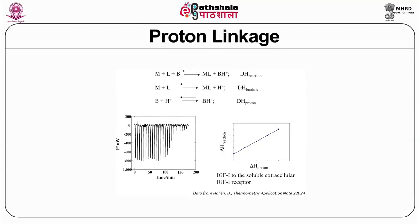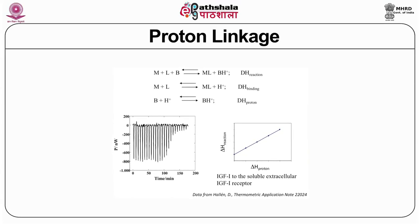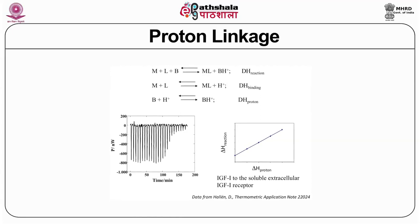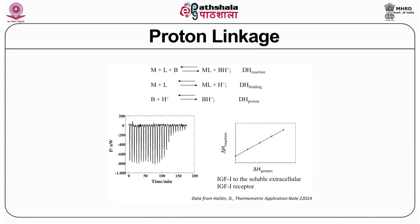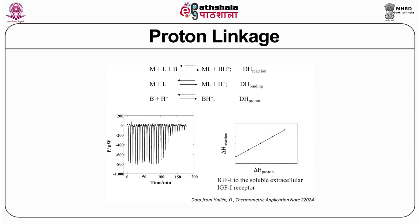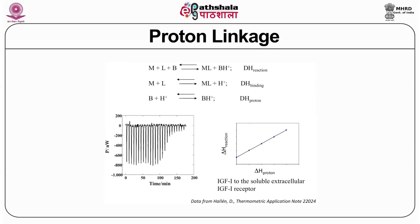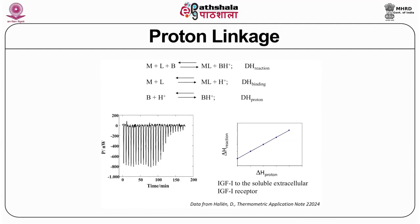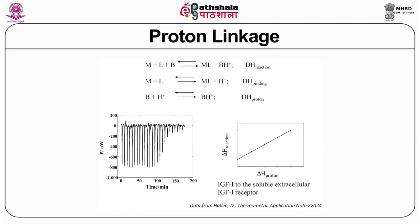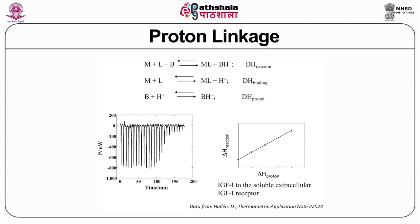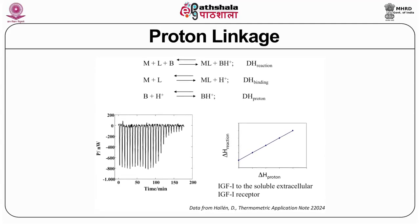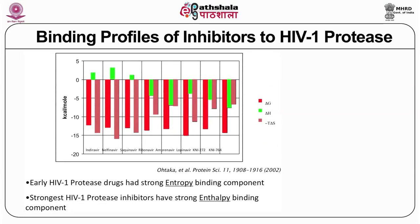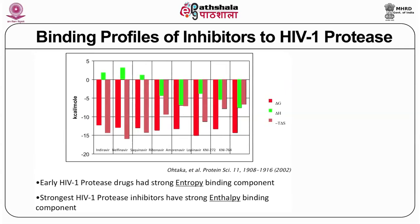When there is a change in pH, there is also a proton linkage. A ligand and a polymer interact to give ML plus BH⁺ — one reaction involves binding coupled to proton interaction. These three components can be found by plotting delta H of the reaction versus delta H of the proton. An example shown is IGF-I receptor 2, specifically the soluble extracellular IGF-I receptor 2. Binding profiles of inhibitors of HIV-1 protease are shown, with data taken from Protein Science, 2002.